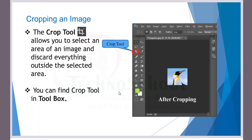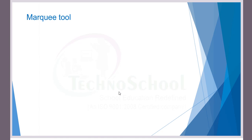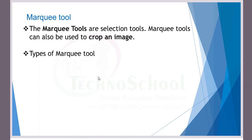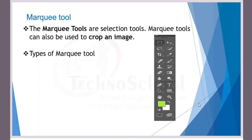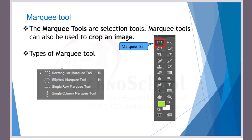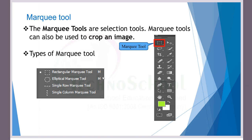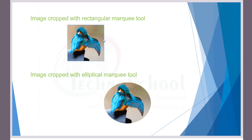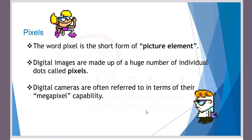We also saw the marquee tool. We have four types of marquee tools in the toolbox. When cropping, you can use the rectangular marquee tool or the elliptical marquee tool, and we saw in detail about pixels.